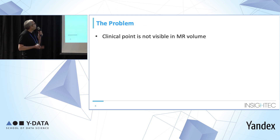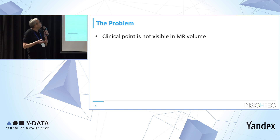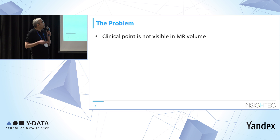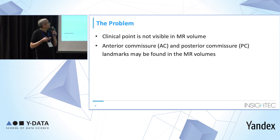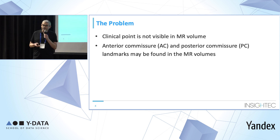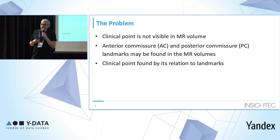Looking at it as an ML project, what we are doing in this treatment is ablating a known clinical point in the brain, which is known to be responsible for this movement disorder. However, this point can't be seen in the MR volumes, but there are known landmarks that can be seen — called anterior and posterior commissions, the AC and PC — and they may be found in the MR volumes. We can define our target point by its relation to these landmarks.